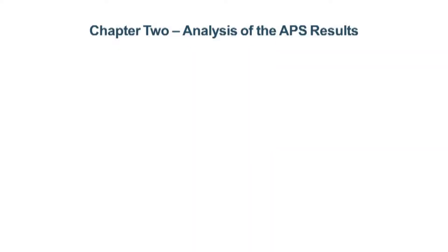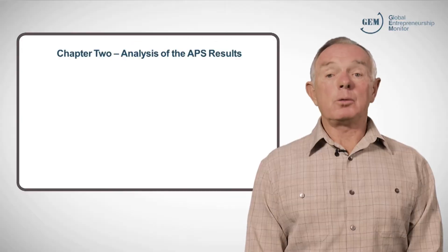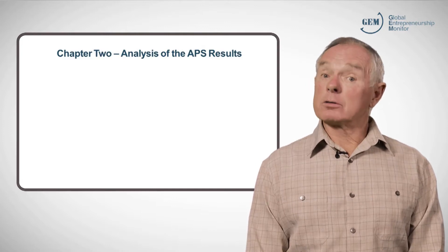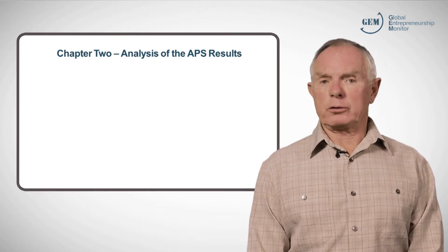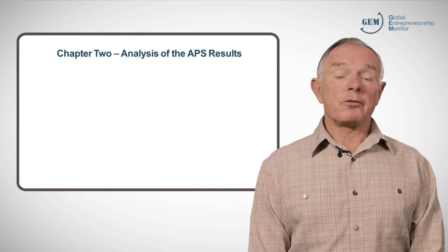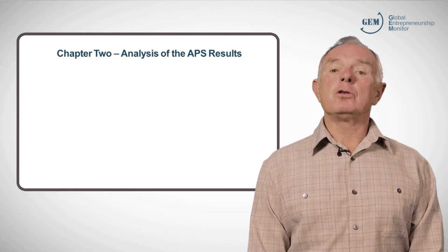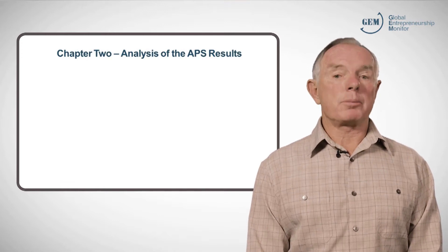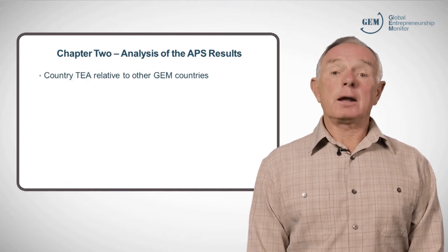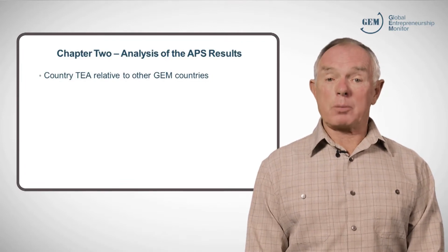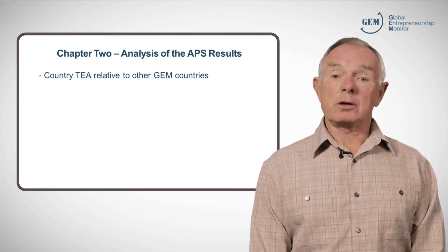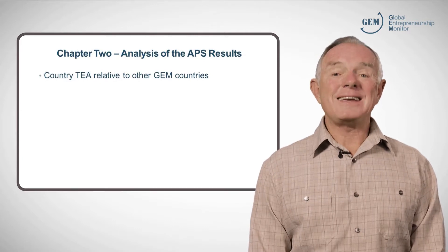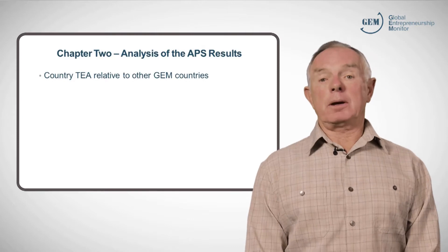The second chapter is normally used to present the results of the Adult Population Survey, in which you discuss the scale and characteristics of entrepreneurship in your country. There are many ways you can do this, as the APS questionnaire provides so much information that it is not possible to include it all in one report. An example of what could be included in your first country report is an insight into where your country rates in its Early Stage Entrepreneurial Activity, or TEA, relative to other participating countries.